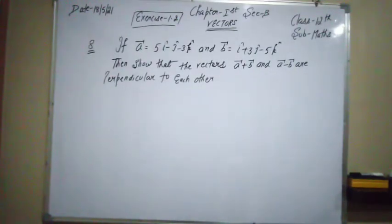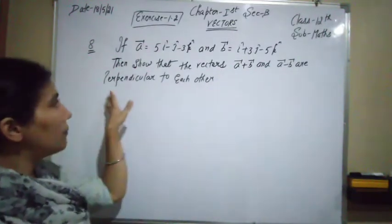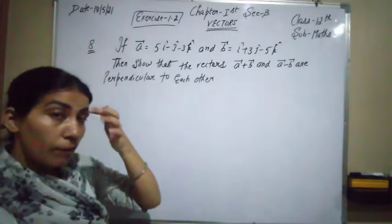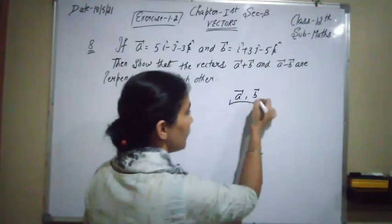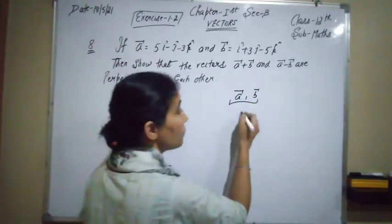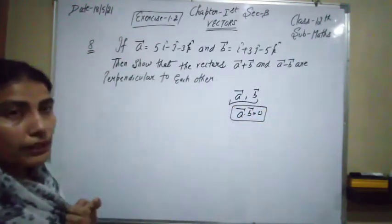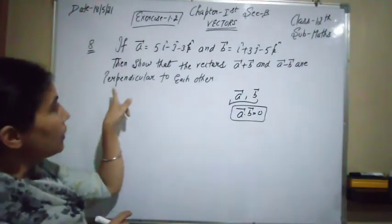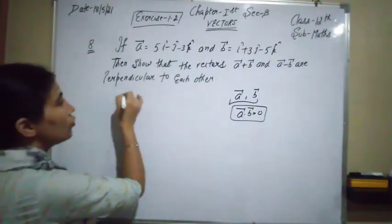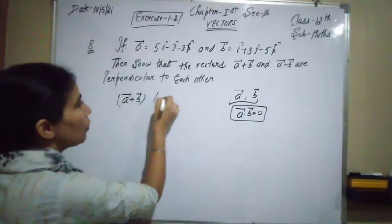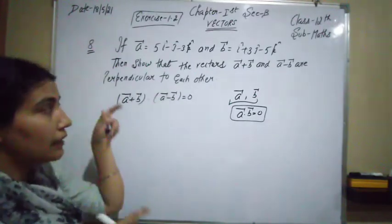The next question gives vectors a⃗ and b⃗, and we have to show that (a⃗ + b⃗) and (a⃗ − b⃗) are perpendicular to each other. The condition for perpendicularity is that the dot product of the two vectors equals zero. So we need to show (a⃗ + b⃗) · (a⃗ − b⃗) = 0.